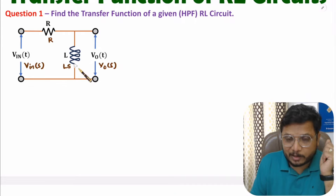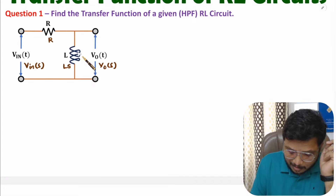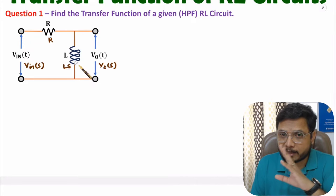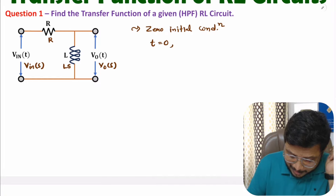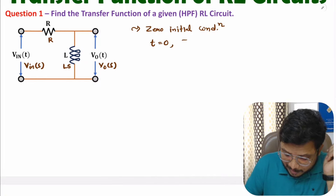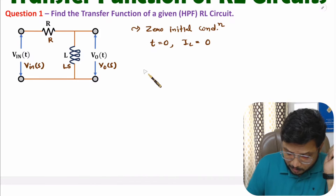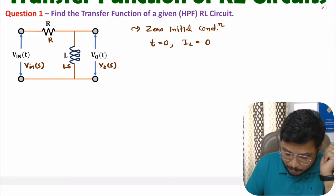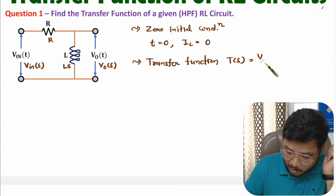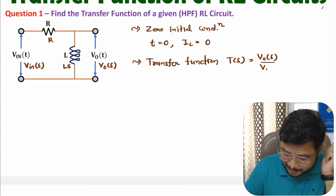To derive the transfer function, we need to consider zero initial conditions. We assume that at time t = 0 there is no energy inside the inductor, meaning the current through the inductor is zero at t = 0. The transfer function is defined as the ratio of output to input — that is, output voltage Vo(s) divided by input voltage Vin(s).